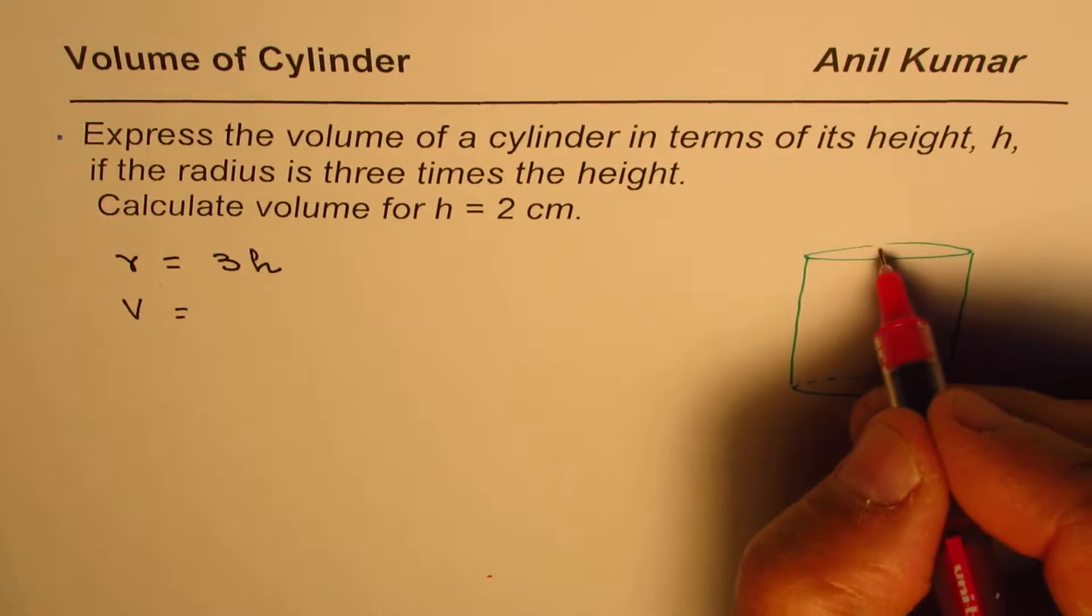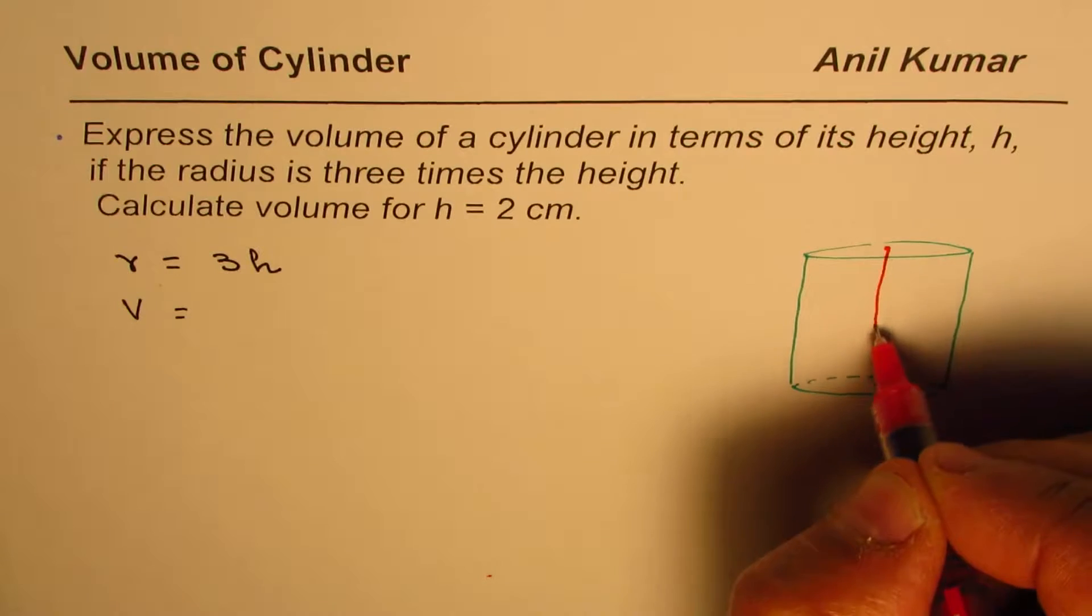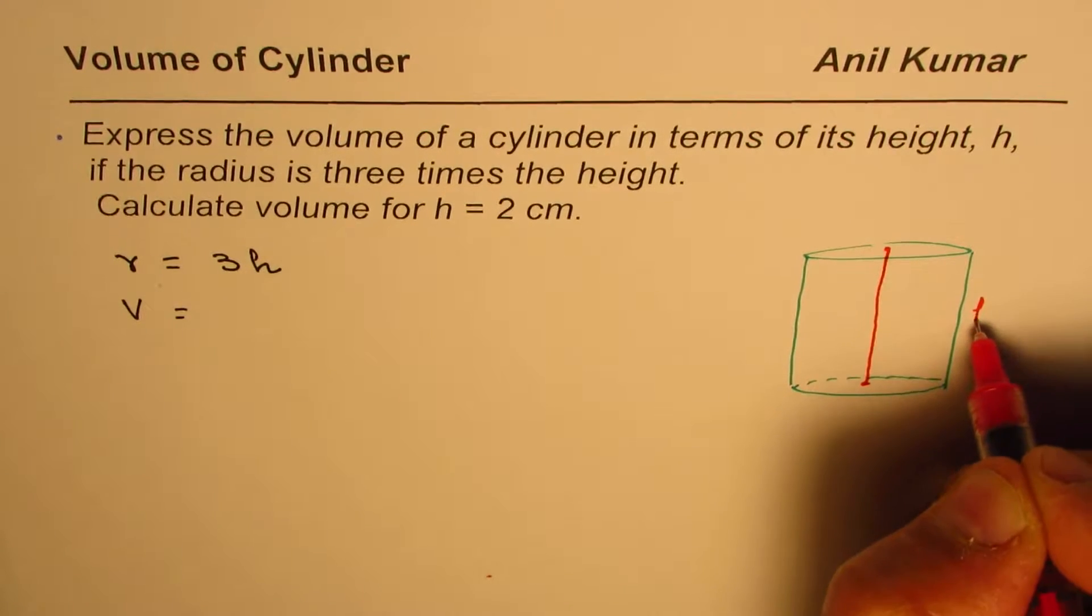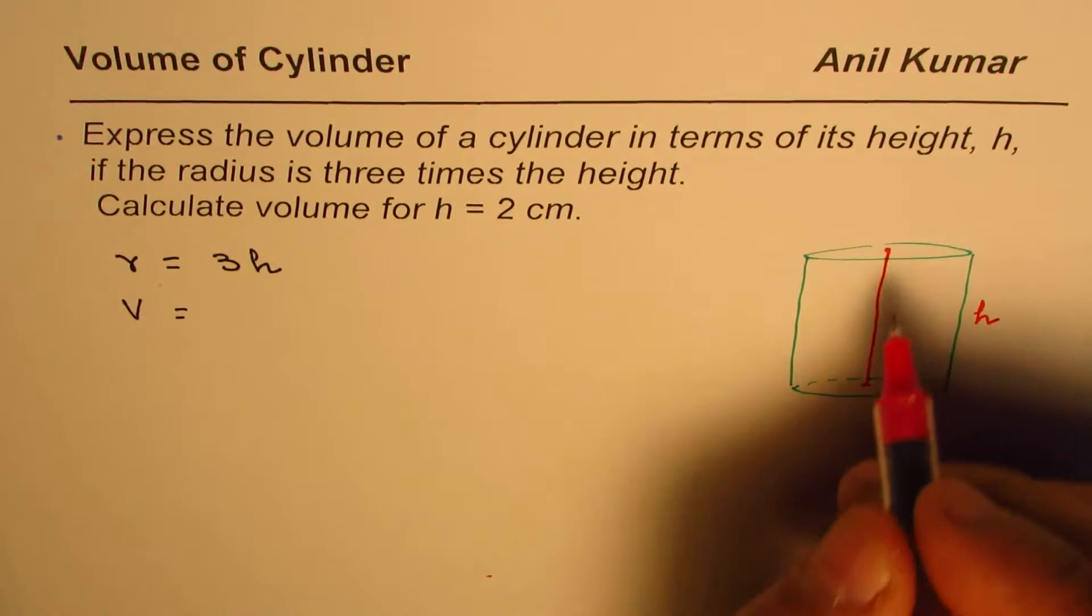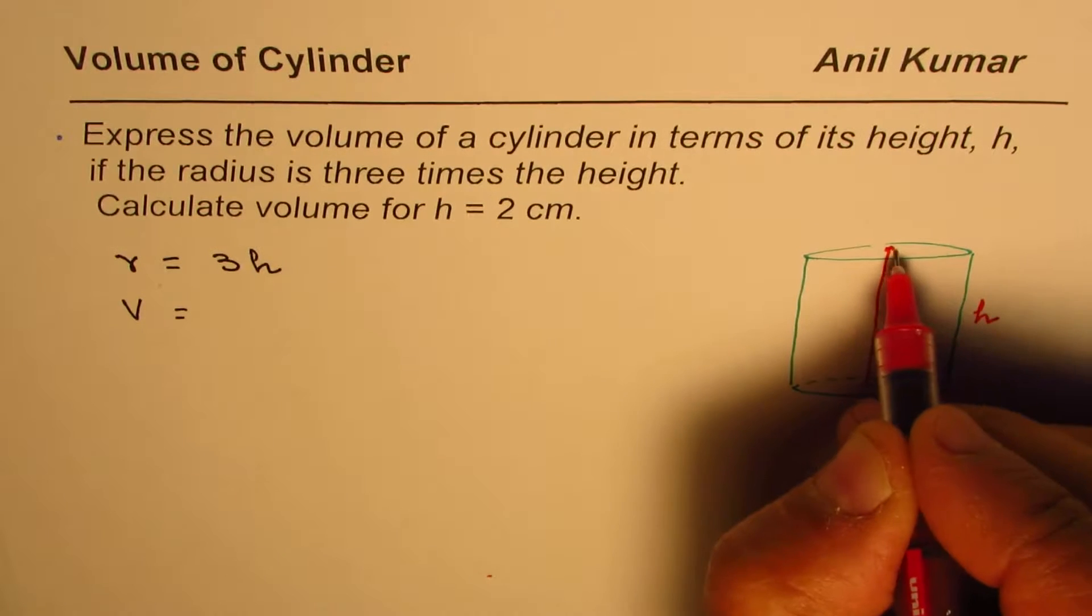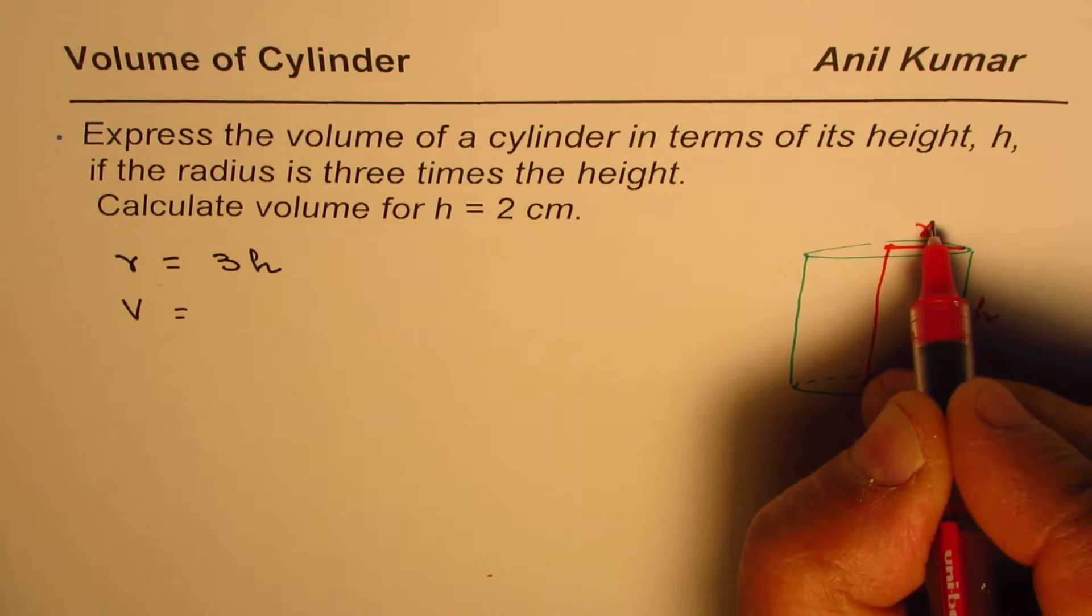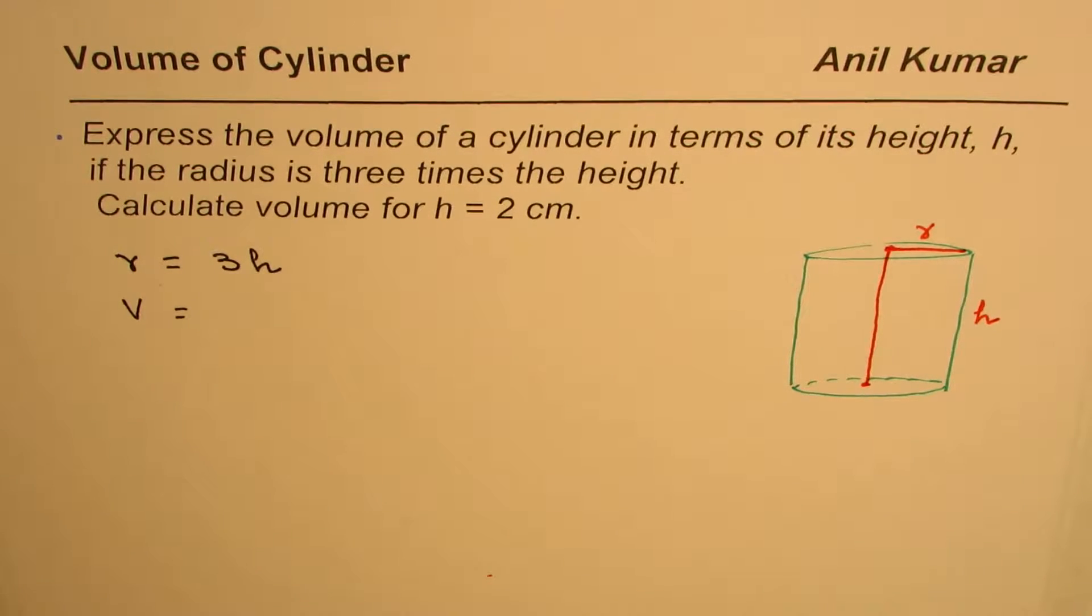In this particular cylinder, the height, which is the distance from here to here, is h. And the radius is half of diameter, so that distance is r.